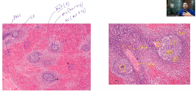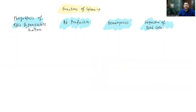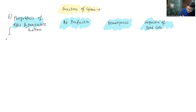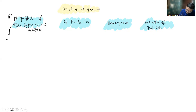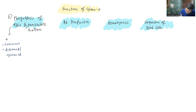Now we will see the functions of the spleen. There are four important functions. The first is phagocytosis of RBCs and particulate matter. Spleen can phagocytose senescent RBCs (120 days old), deformed RBCs, or opsonized RBCs — as discussed in extravascular hemolysis.